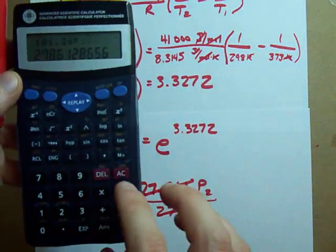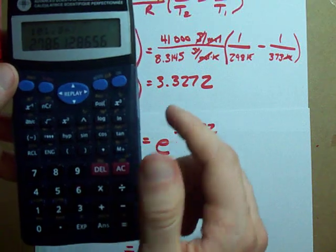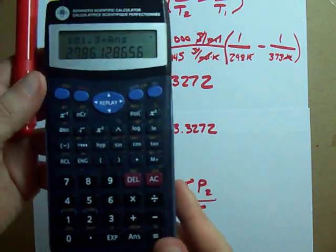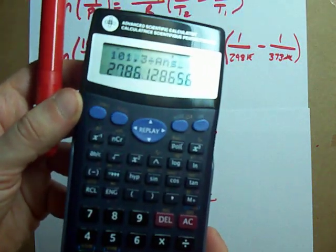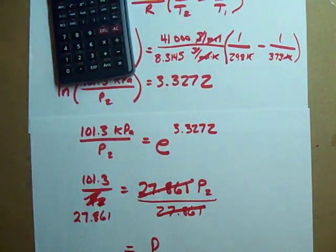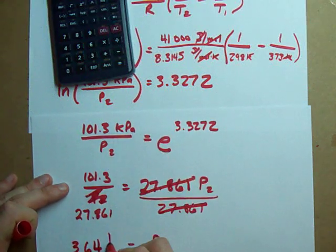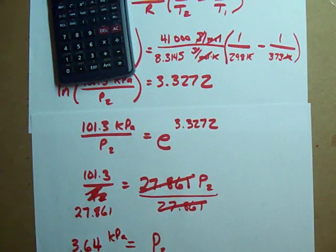Oh, crap. Oh, crap. Uh, yeah, saved it. Answer. 101.3 divided by my answer gives 3.64. And my units are kilopascals, because that was the unit I was given at the beginning.